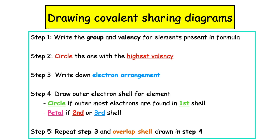Step five: we repeat step three, and we make sure that we overlap the shell which was drawn in step four so that we can get them to have a shared pair of electrons.